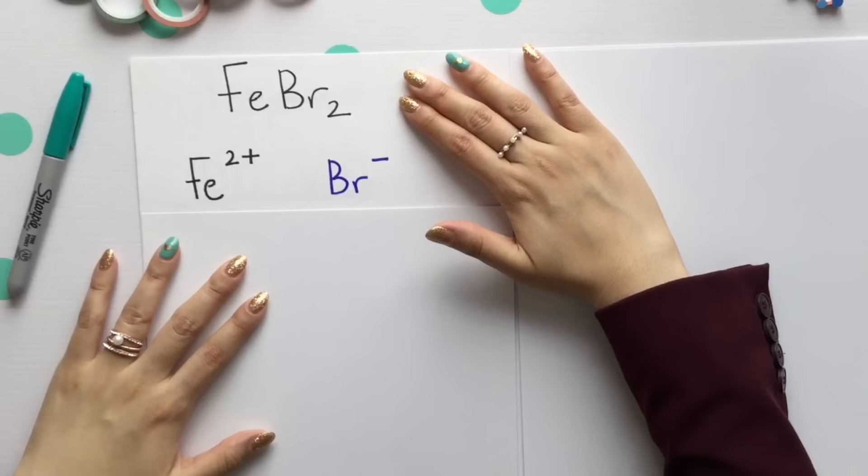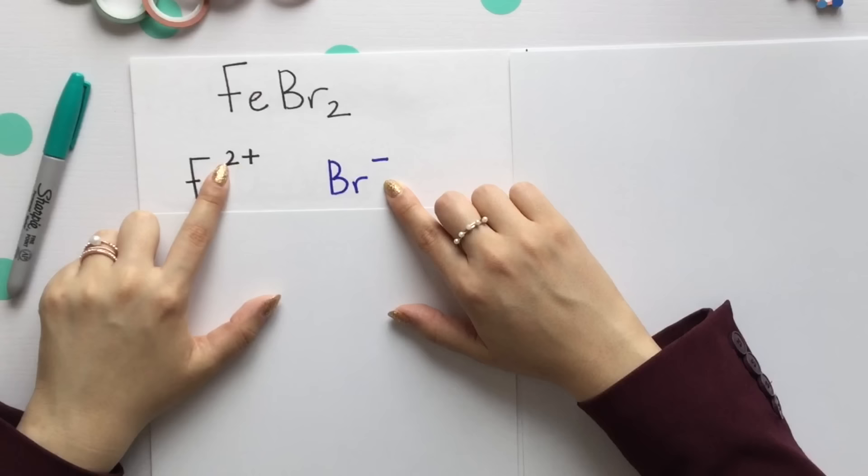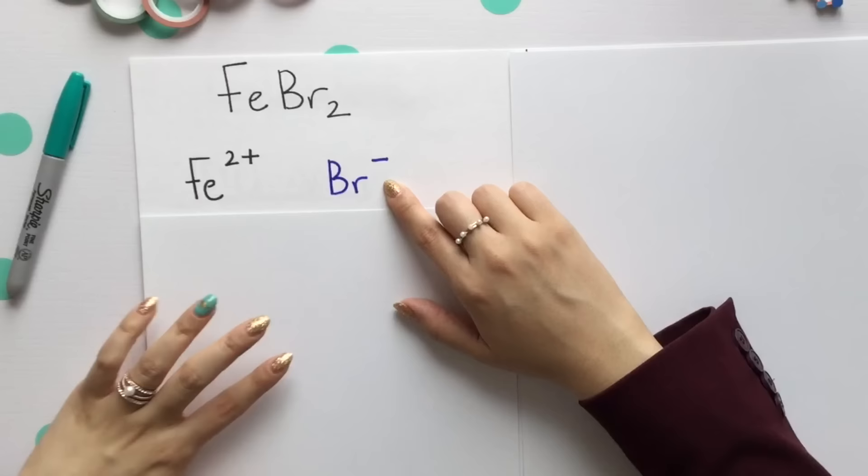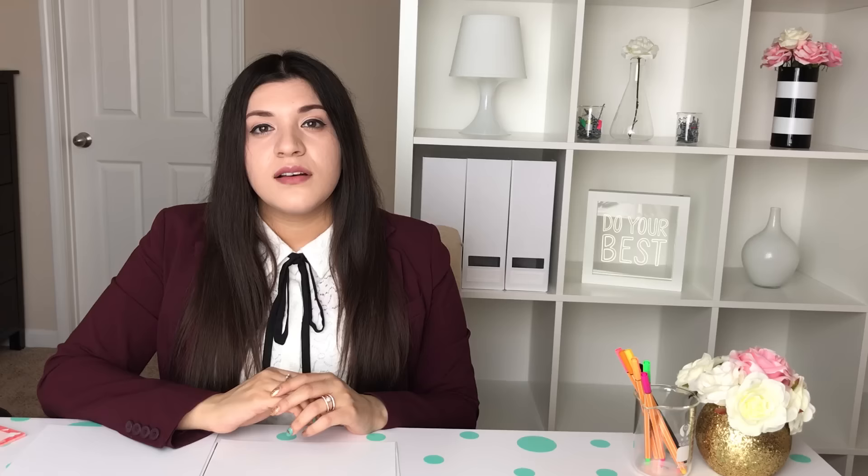To figure out your Roman numeral, let's go back to the overall charges. Bromine is a type of halogen, meaning it has a negative 1 charge. Since this had a negative 1 charge, Fe or iron must have had a 2+ charge. Another way of identifying this is if we go backwards, this 2 would go back onto the iron since bromine needed 2 to balance out the charges. We'll have iron 2 bromide.